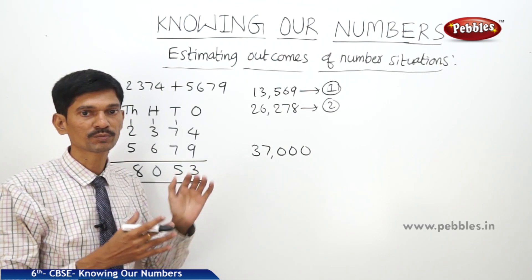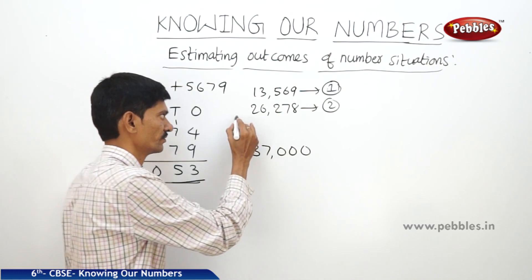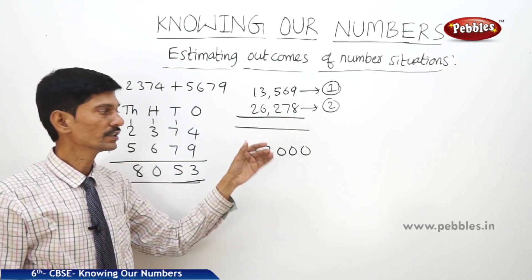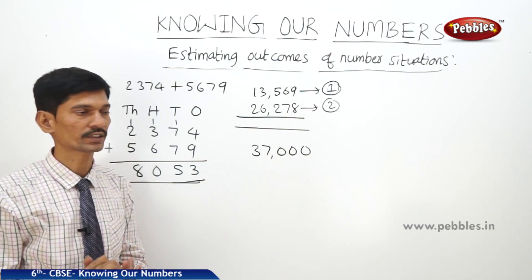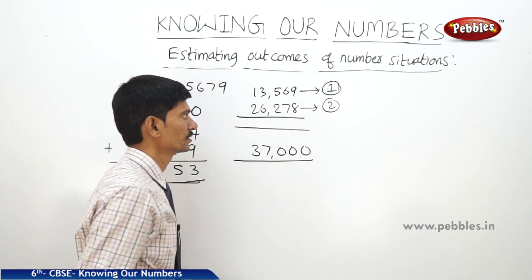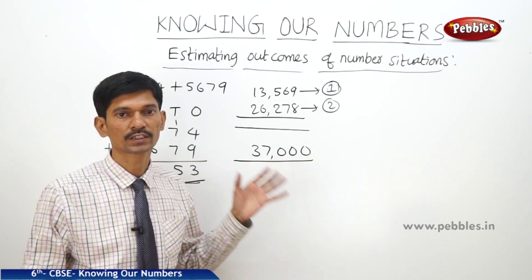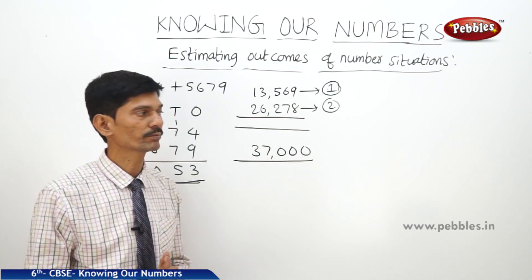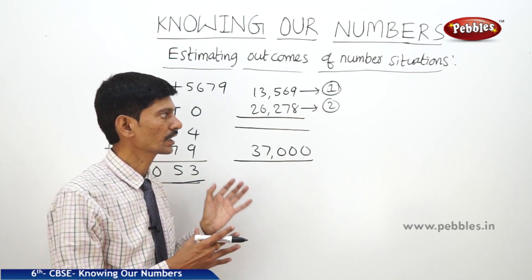Now whether his estimation is correct or not — we can add the 2 numbers and check if the amount received from the 2 sources is more than the amount he has to pay. Then his estimation is correct. There are no rigid rules to estimate outcomes, but it depends on how quickly and correctly we estimate.